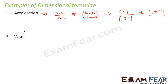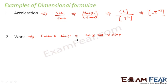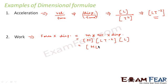Now let us find the dimensional formula for work. Work is force multiplied by displacement, and force is mass into acceleration. Mass is written as M, acceleration as L·T⁻², and displacement as L. Therefore the dimensional formula for work becomes M·L²·T⁻².